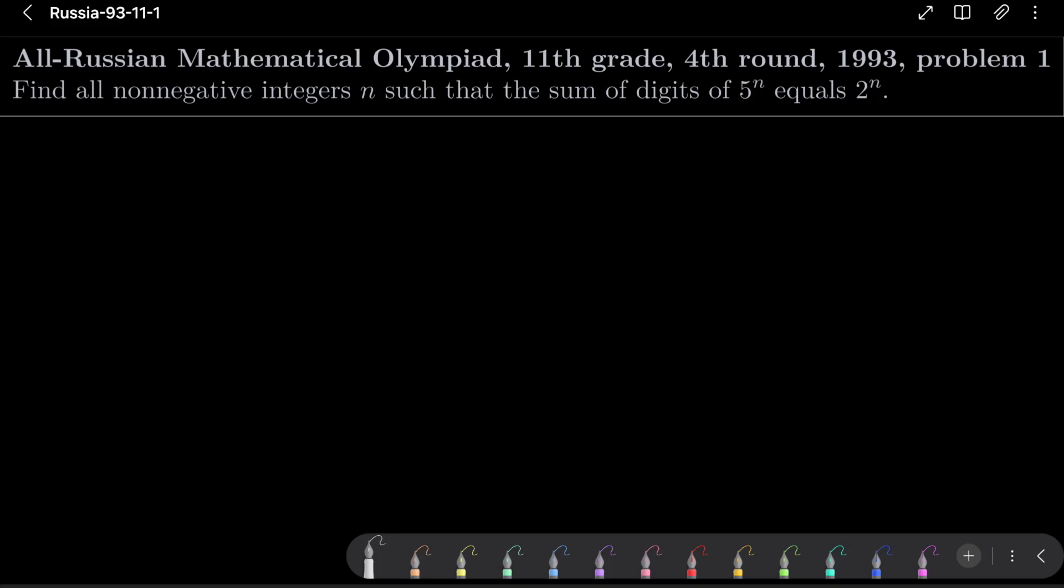We wish to find all non-negative integers n such that the sum of digits of 5 to the power of n equals 2 to the power of n. Of course we are talking about decimal system.